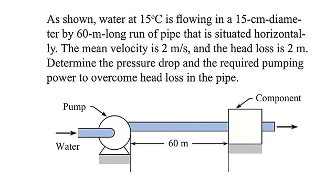Interpret the problem statement. A pump is driving water through a 60 meter run of pipe. The temperature is 15 degrees C. The pipe diameter here is 15 centimeters or about one half a foot. The mean velocity is two meters per second and the head loss in this section of pipe from here to here is two meters.